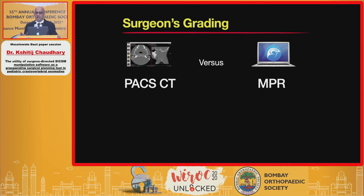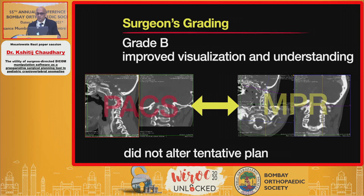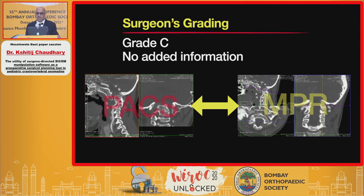The operating surgeon compared information obtained using PACS versus MPR and graded it into three categories. Grade A was given when substantial new information was obtained on MPR that altered the tentative surgical plan. Grade B was given when MPR was confirmatory and allowed better visualization and understanding but did not change the plan. Grade C was where there was no added information on MPR.